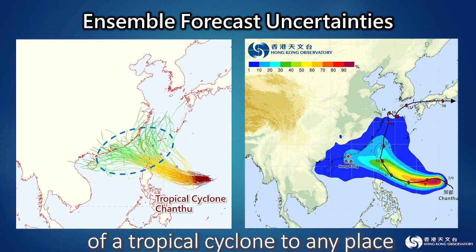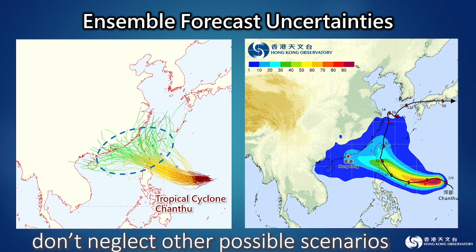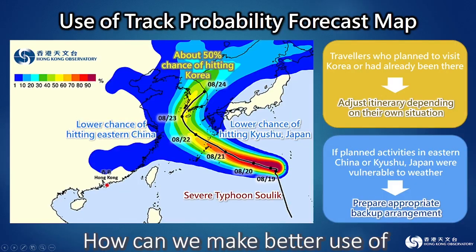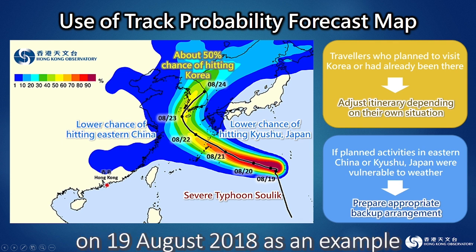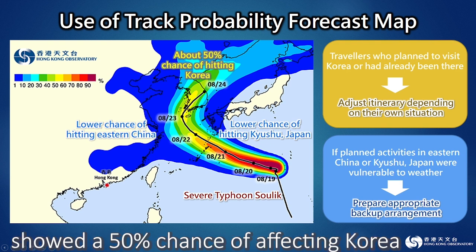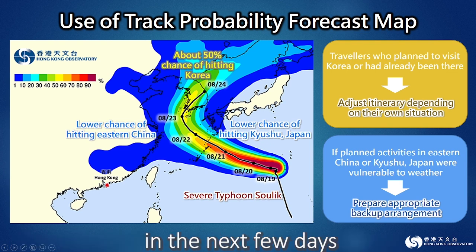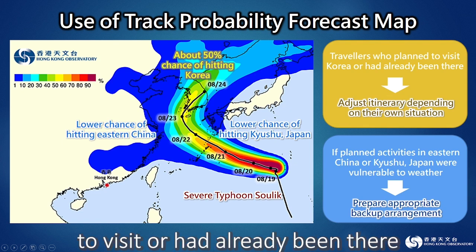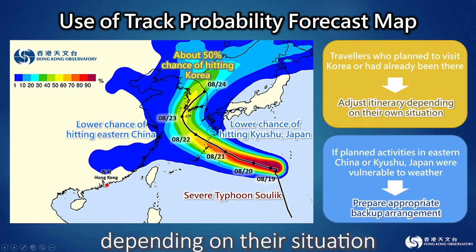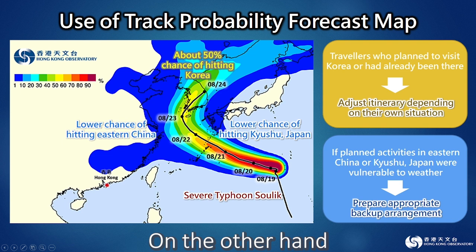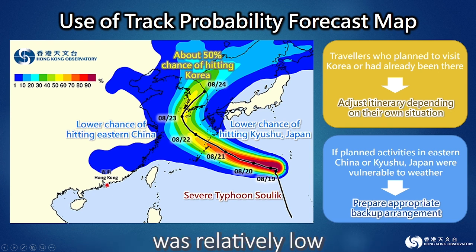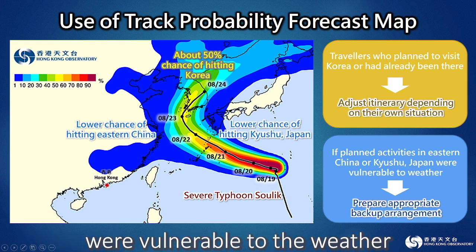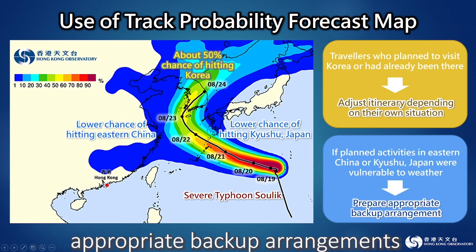Thus, when we assess the threat of a tropical cyclone to any place, don't neglect other possible scenarios. Taking severe typhoon Solik on 19th August 2018 as an example, the track probability forecast map showed a 50% chance of affecting Korea in the next few days, so travelers who planned to visit or had already been there could adjust their itinerary. Though the chance for Solik to affect eastern China or Kyushu of Japan was relatively low, if the planned activities at these places were vulnerable to the weather, appropriate backup arrangements should be prepared.